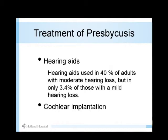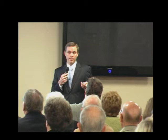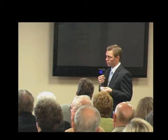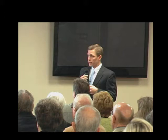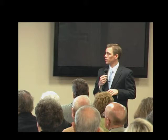The treatment is almost invariably hearing aids. Hearing aids are used in about 40% of patients with moderate hearing loss, but only about 3% of patients who have just mild hearing loss. A study of school kids found that about 37% of kids with mild hearing loss fail a grade, compared to only 2% of kids without hearing loss. So mild hearing loss is a significant problem, although stubborn people don't like to admit it. If it gets to the point where hearing aids don't work, cochlear implantation is also an option.